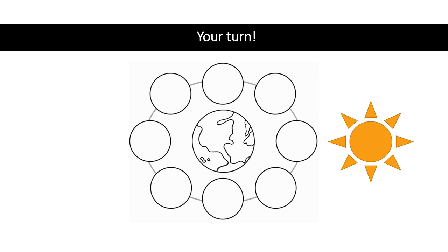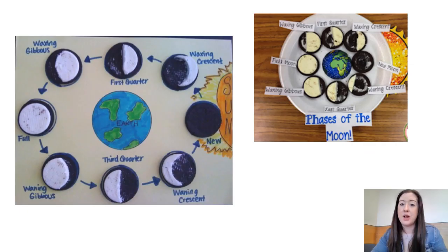One of my favorite ways to create a phases of the moon model is to use Oreos. If you pull apart the Oreo, you are left with some filling which you can easily scrape away to represent the different phases. It is an absolutely delicious way to represent the phases of the moon as well.